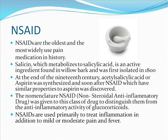NSAIDs are the oldest and most widely used pain medication in history. Salicin, which metabolizes to salicylic acid, is an active ingredient found in willow bark and was first isolated in 1800. At the end of the 19th century, acetylsalicylic acid, or aspirin, was synthesized, and soon after, drugs with similar properties to aspirin were discovered. The nomenclature NSAID, which stands for non-steroidal anti-inflammatory drug, was given to this class of drugs to distinguish them from the anti-inflammatory activity of glucocorticoids.